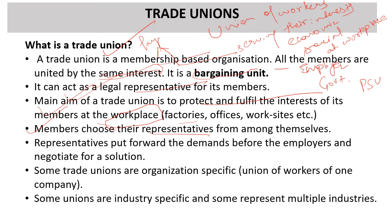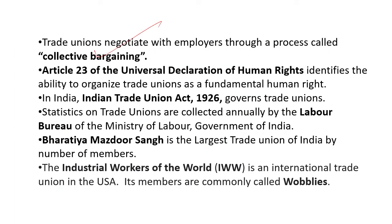Members choose their representatives from among themselves — one can become secretary, one treasurer, one president of the trade union. They represent the whole set of workers and go to employers to negotiate on labor contracts or other things. Representatives put forward their demands before employers and negotiate for a solution through collective bargaining. Some trade unions are organization-specific, some are industry-specific.